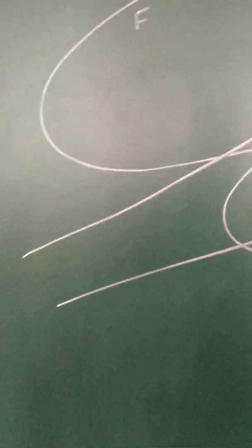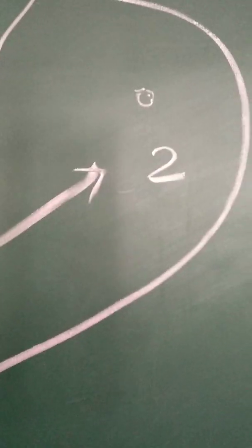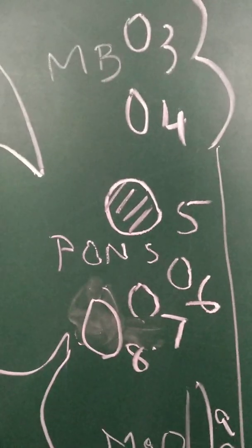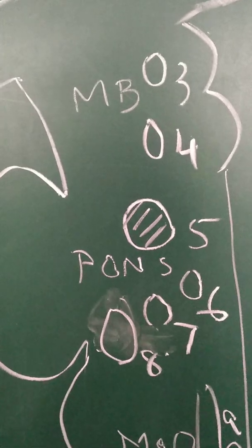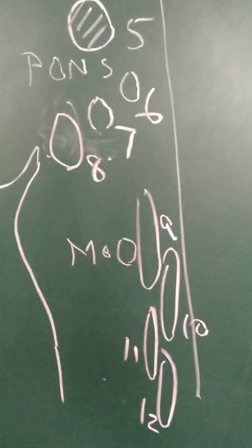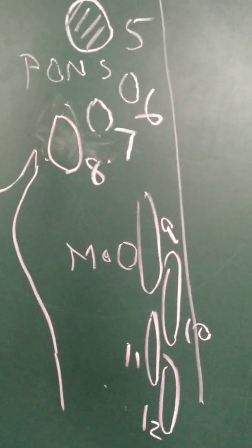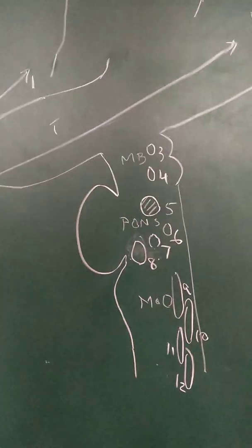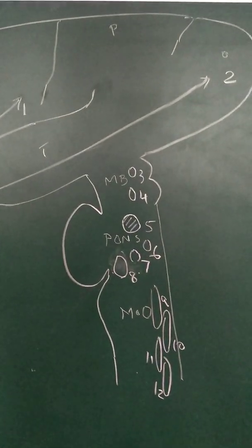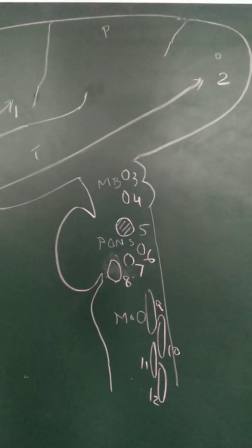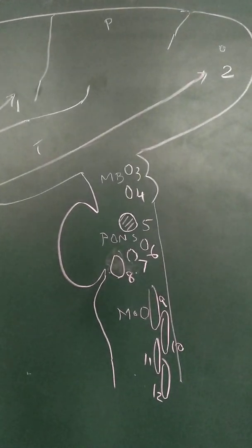In summary: cranial nerves one and two end in the cerebral hemispheres — the first in the frontal lobe, the second in the occipital lobe. Cranial nerves three and four are in the midbrain. Five, six, seven, and eight are in the pons — five and six in the upper pons, seven and eight in the lower pons. Nine, ten, eleven, and twelve are in the medulla oblongata — nine and ten in the upper medulla, eleven and twelve in the lower medulla. These are the simplest cranial nerve nuclei locations.